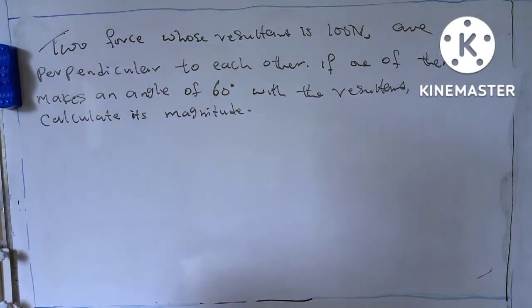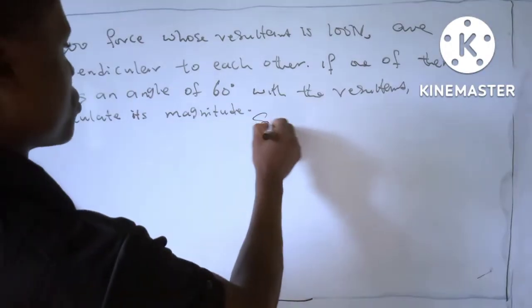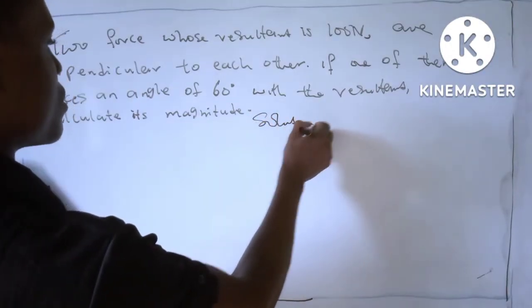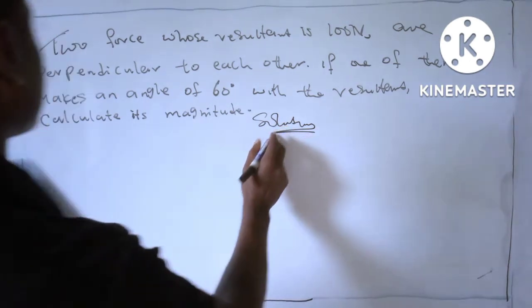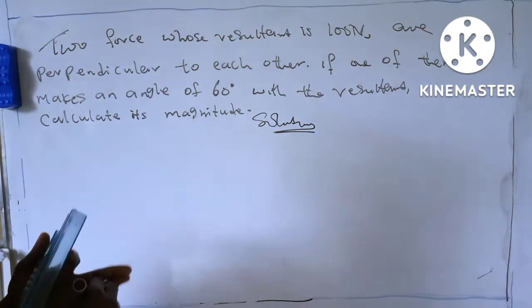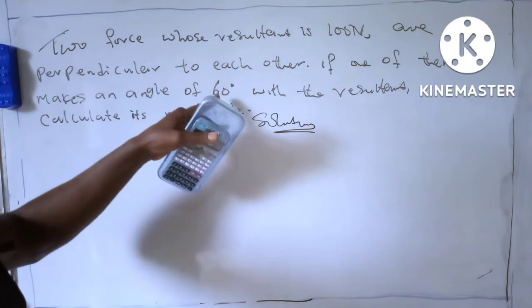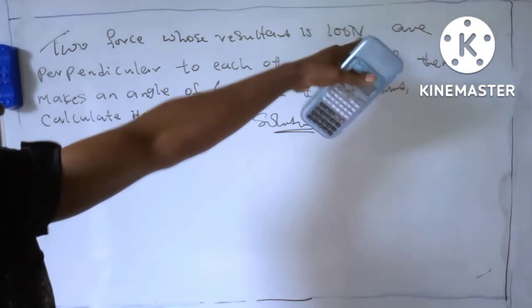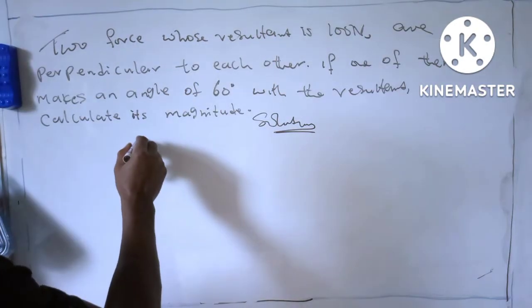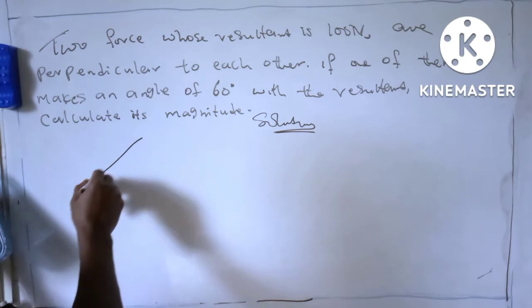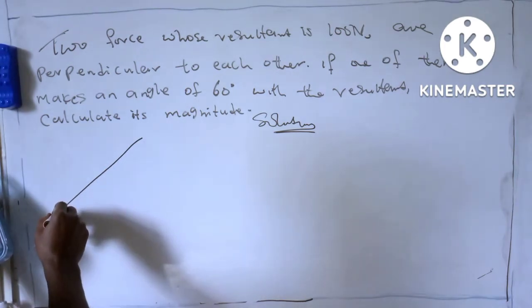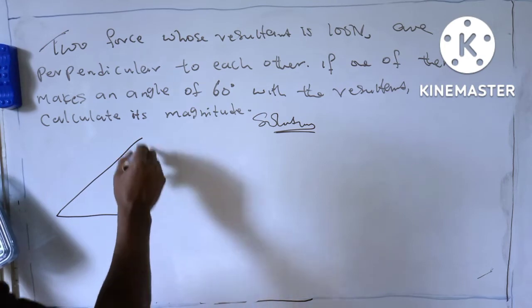Okay, solution: let's draw the diagram and represent the 60 degrees and the 100 Newton. We know these are resultants, right? Let's draw it like this.